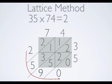The 2 is our thousands. The 5 is our hundreds. The 9 is our tens. And the 0 is our ones. 2,590 is the answer to 35 times 74.